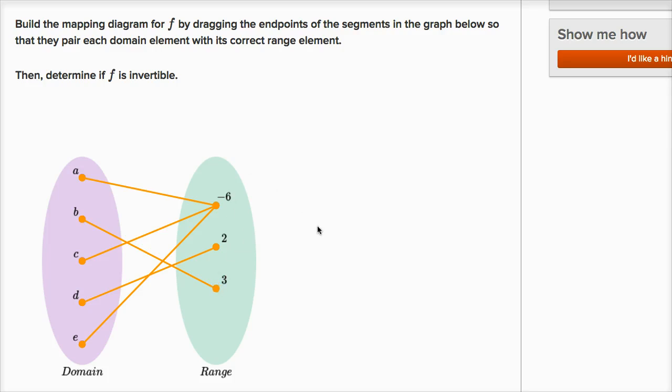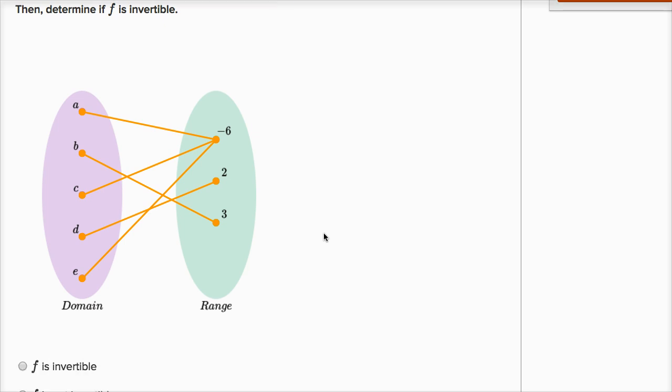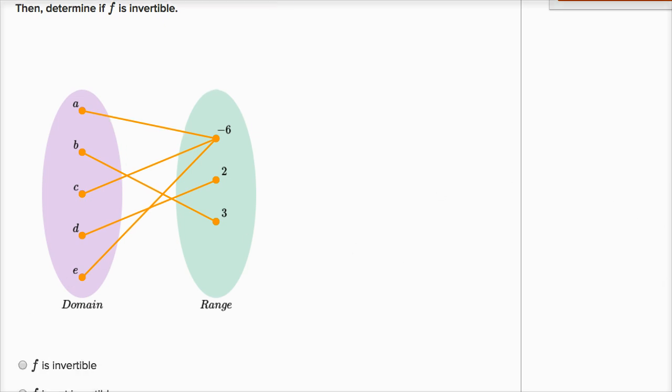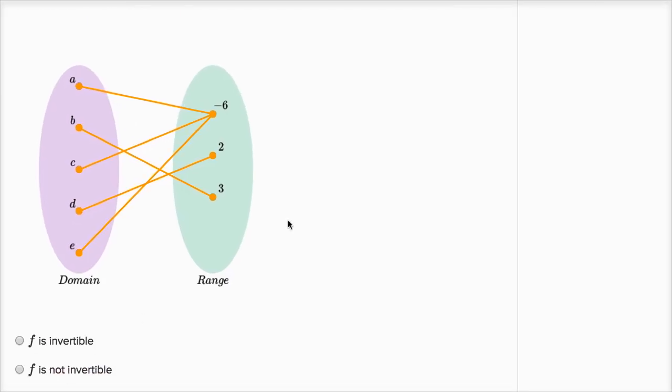But also ask ourselves, is this function invertible? And I already hinted at it a little bit. Well, in order for it to be invertible, you need a function that could go from each of these points, that can do the inverse mapping. But it has to be a function.